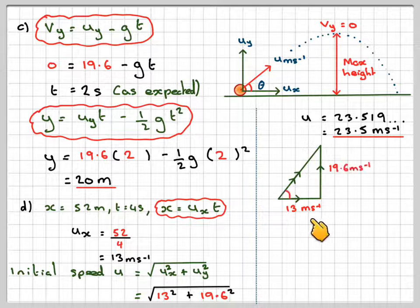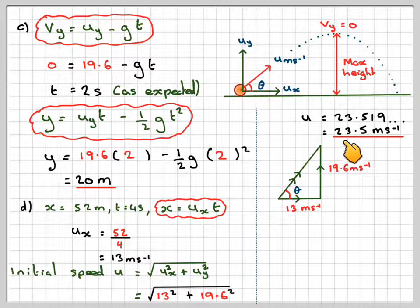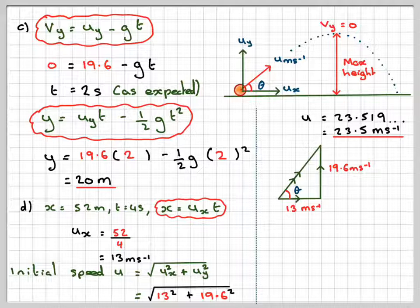If we now put this into some sort of triangle, where this is the angle that I need to find for the direction. So this component is 19.6, which we'll put here. This component is 13, which we'll put here. And then we can find theta.